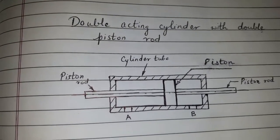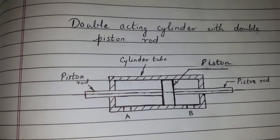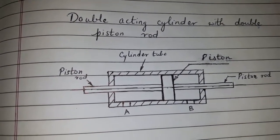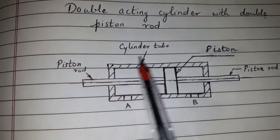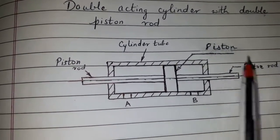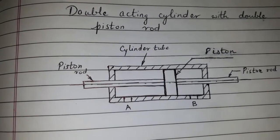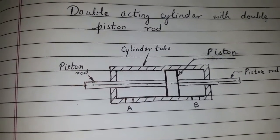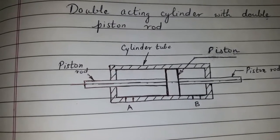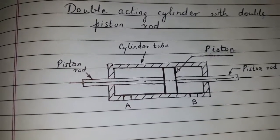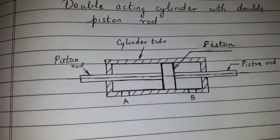With double acting cylinder with double piston rod, we can obtain useful work at both ends. This type is used in controlling table movement in cylindrical grinding machines and surface grinding machines.